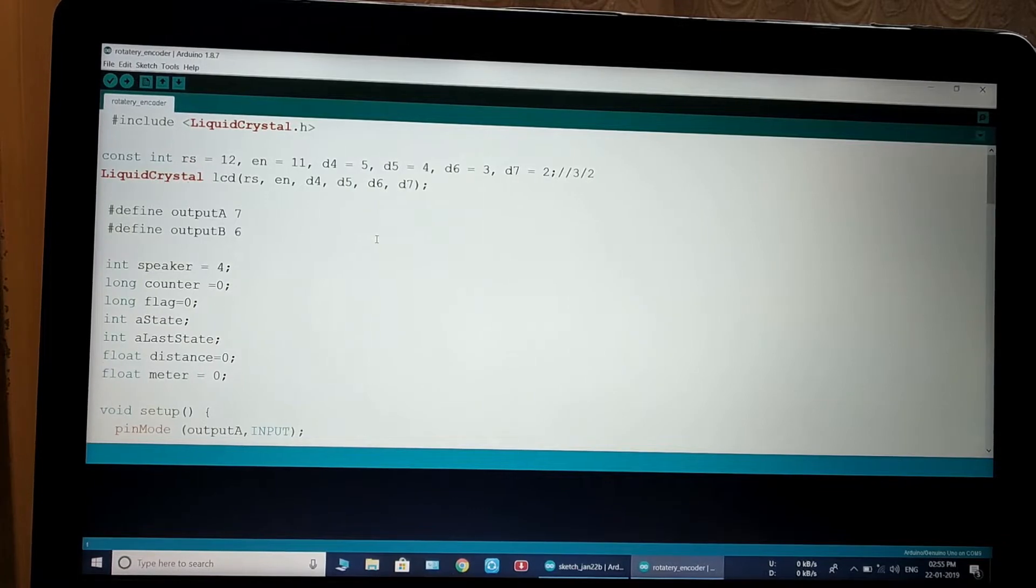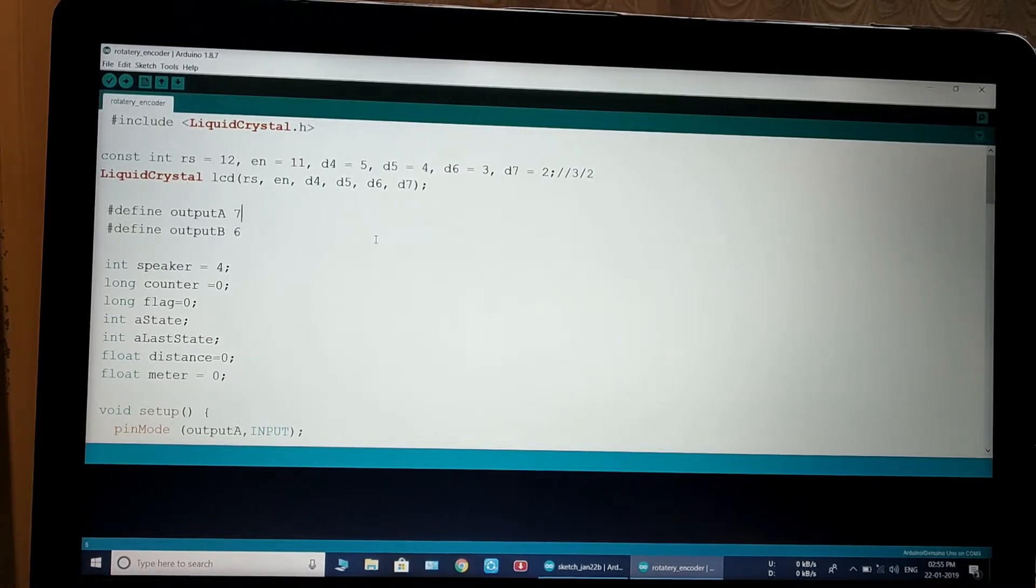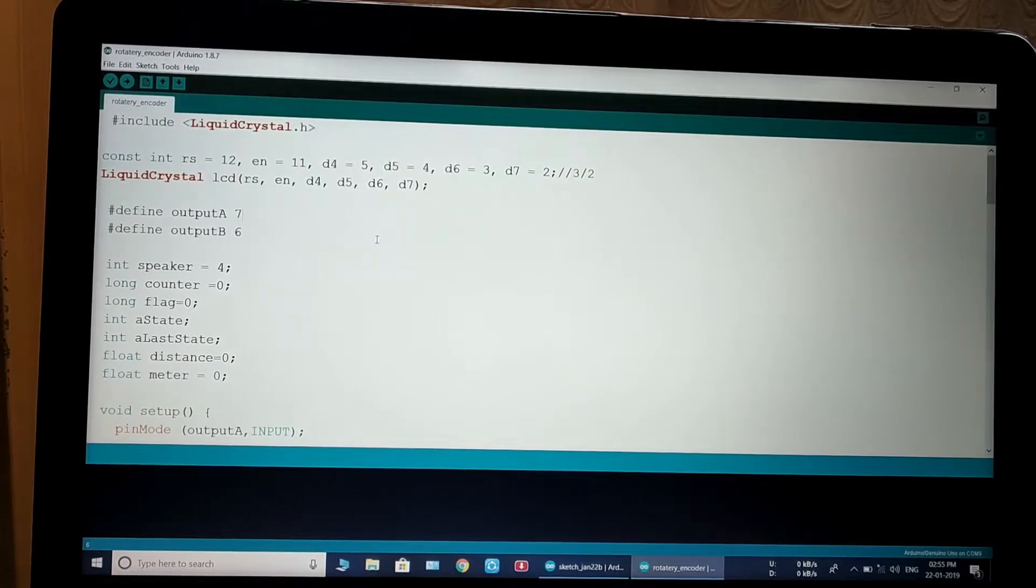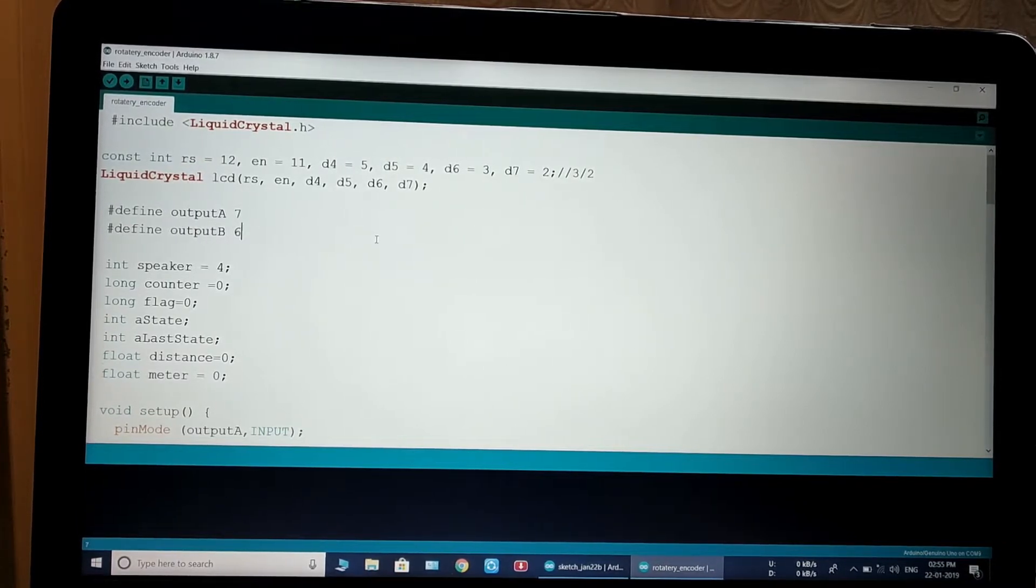This is for the liquid crystal. It is the header file for the liquid crystal. These are the pins - these are pin A and pin B of the encoder.